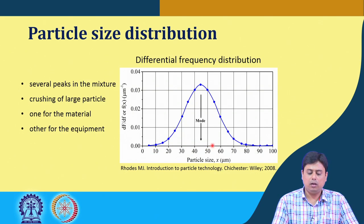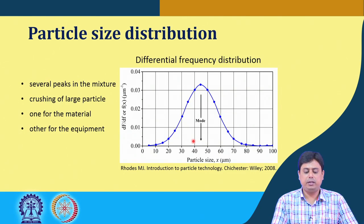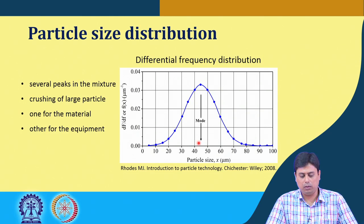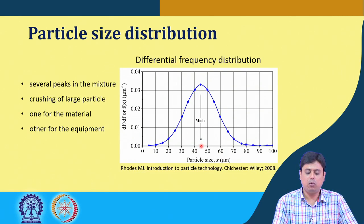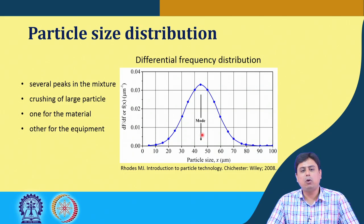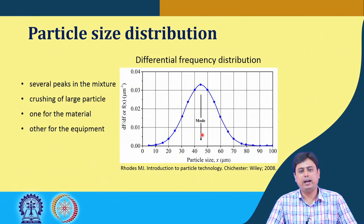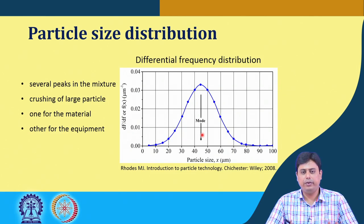In the differential frequency distribution, the mode represents the most frequently occurring size of the particle in that sample — it is represented by the peak value of the whole plot. This peak represents the mode of this curve. Again, a similar number like 44 or 45 micron is obtained. So the size distribution can be plotted in two ways: one is the cumulative mass fraction plot, and the other is the differential frequency distribution plot. By median and mode we find a single number to characterize the sample or designate one number to represent that collection of particles.